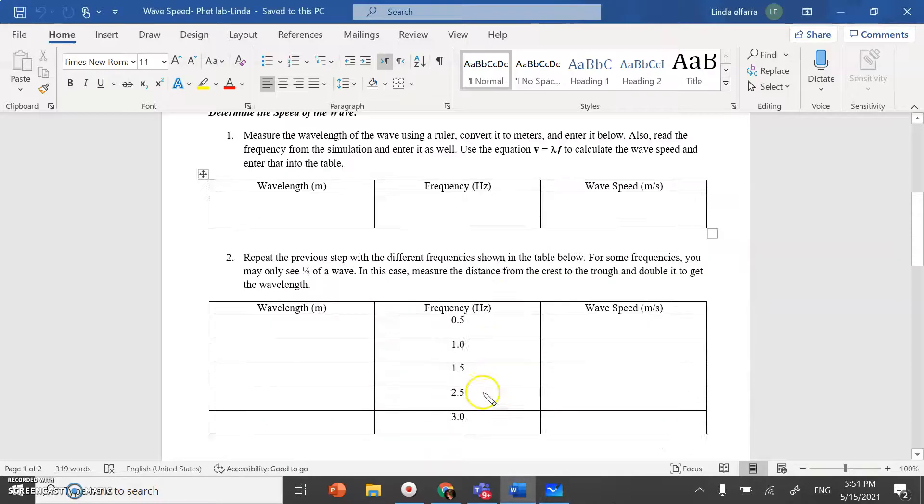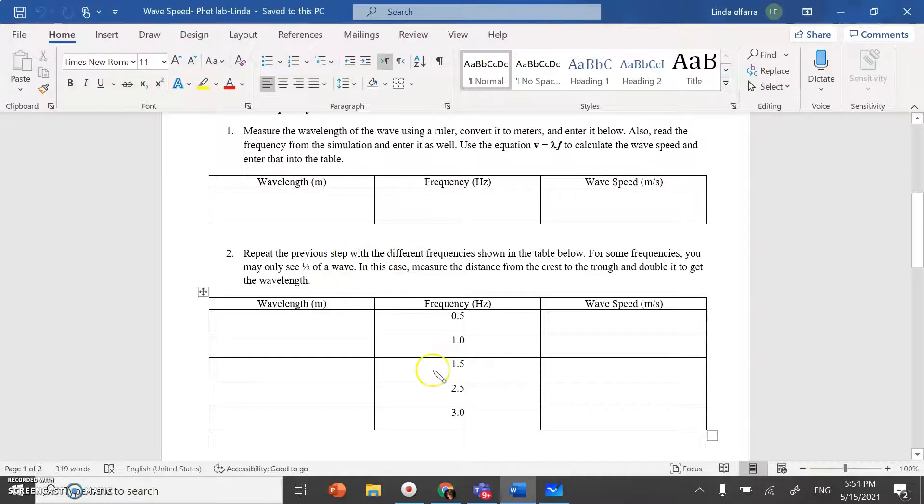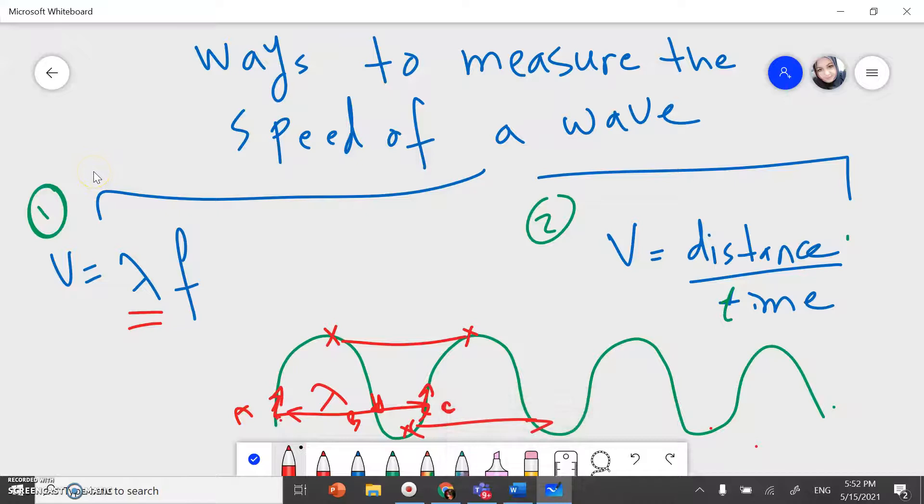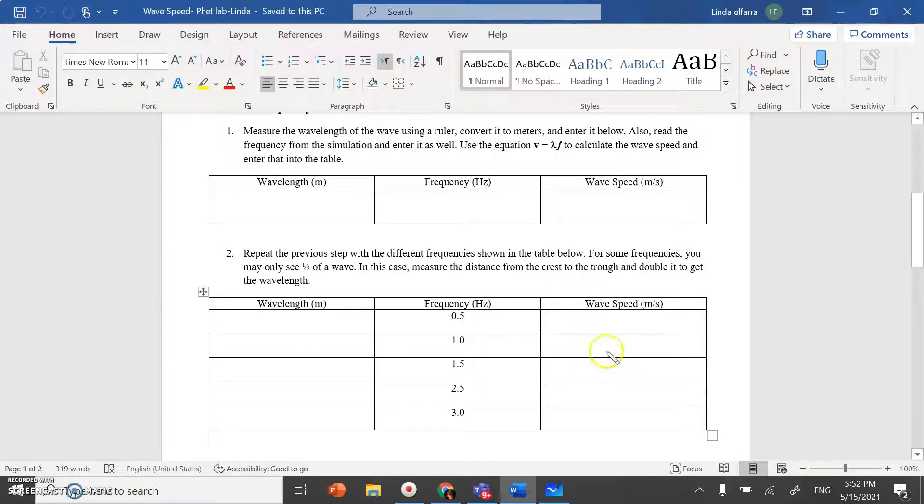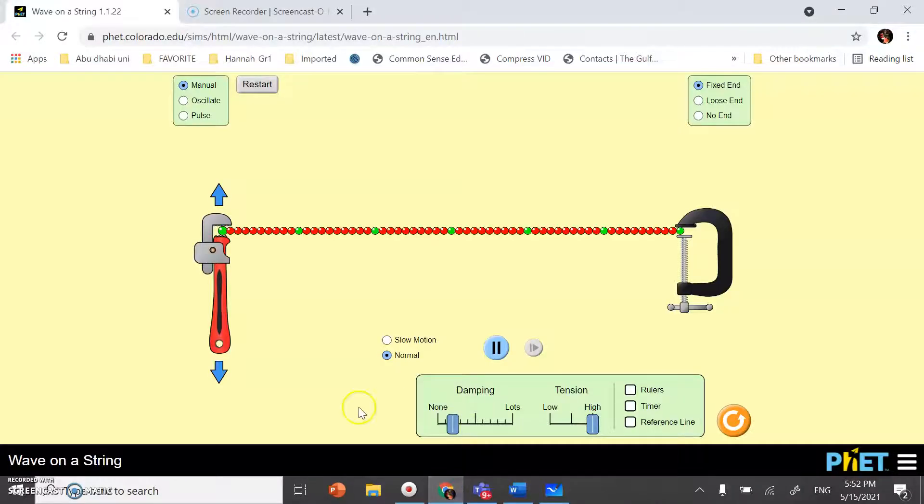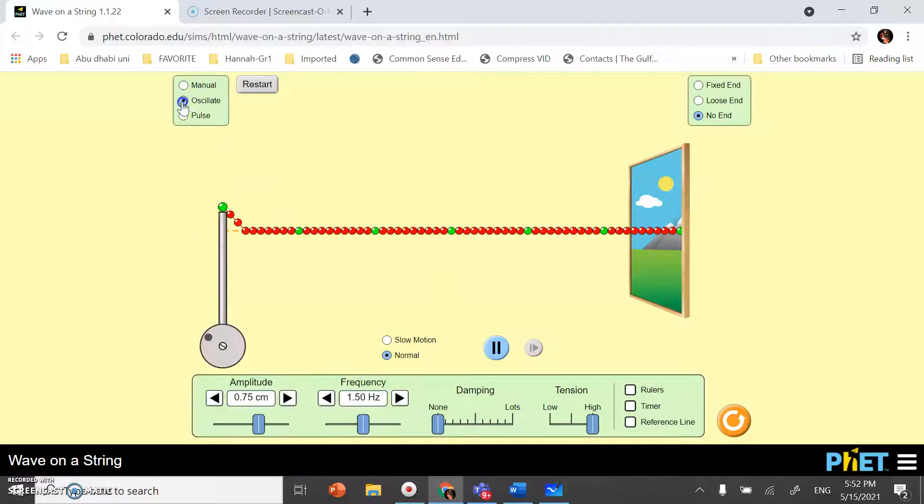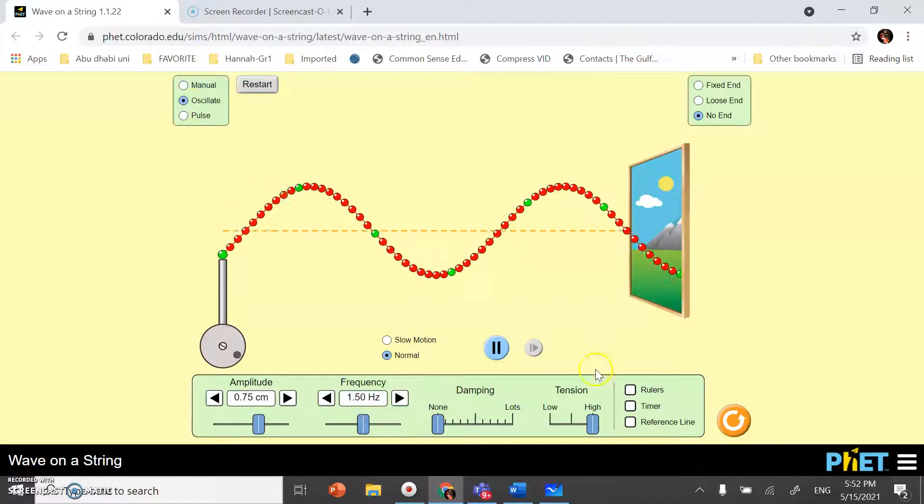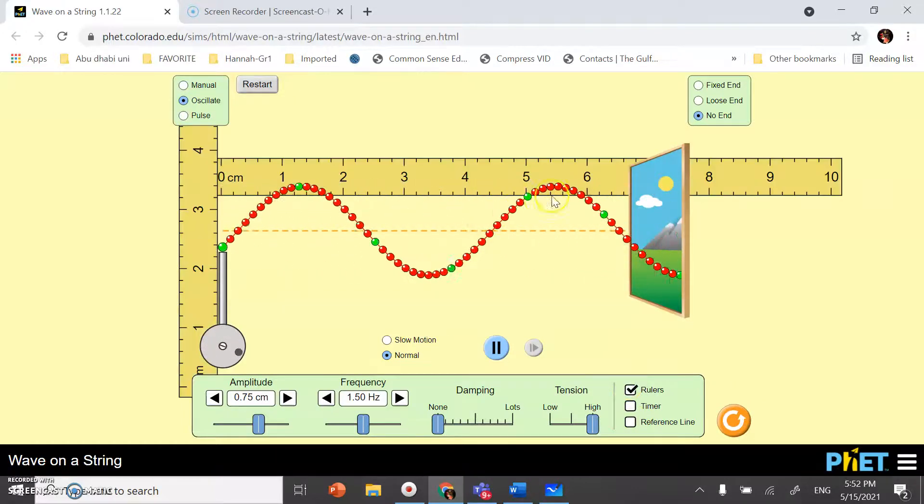So, first, we're going to fill these two tables. The first one, I have to change the frequency. And each time, I need to measure lambda. After that, I can use this formula, lambda times F to find the speed. The speed should always give the same number, constant value. So, let's try. I'm going to try the first one. I will choose no end because I don't want any reflection. Damping, no damping, because I need to get a perfect sine wave and oscillate.